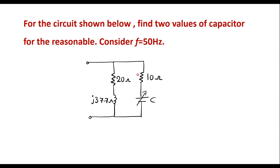This is the given circuit — it is a parallel resonant circuit. Here we can observe that this is RL, this is jXL, this is RC, and this will be minus jXC. That is, here this is RL, this will be jXL, this will be RC, and this term will be minus jXC.